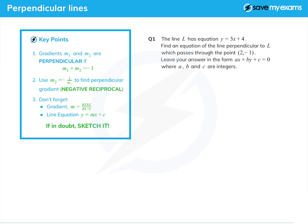Let's have a look at some questions. We're given a line L which has equation y equals 3x plus 4, and we note from that if we look at y equals mx plus c, then the gradient is 3 and the y-intercept is 4. We're asked to find an equation of a line which is perpendicular to that line L and passes through (2, -1).